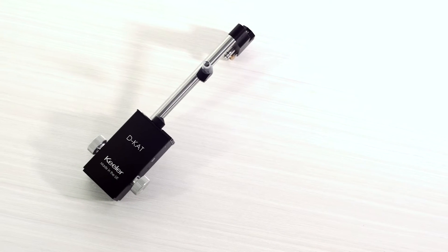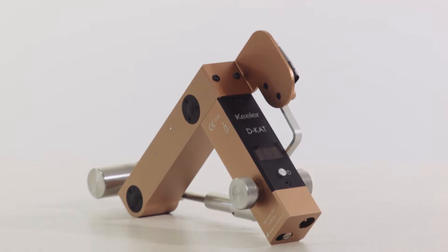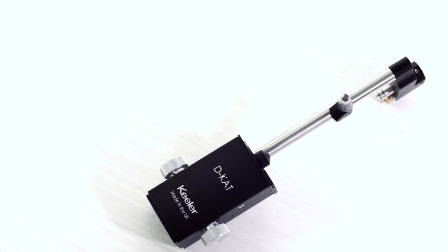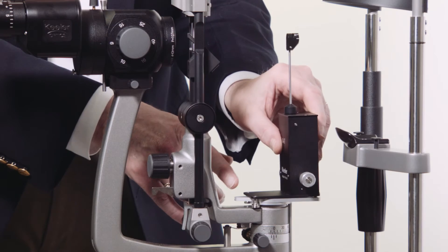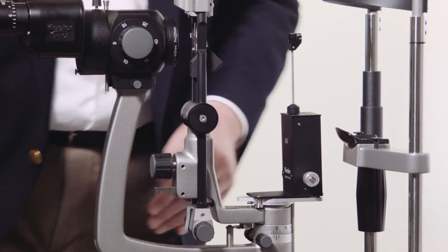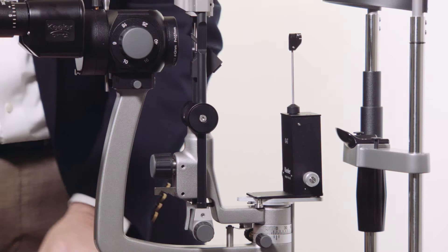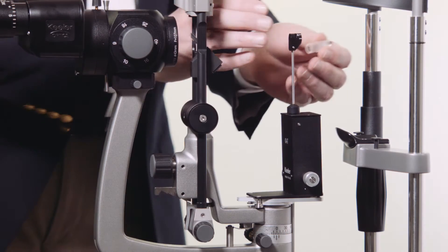The Keeler Applanation Tonometer Series uses the widely acclaimed Goldmann Applanation Principle to directly assess intraocular pressure by measuring the force required to flatten a constant area of the cornea. The advantage of using a Goldmann-type tonometer is that IOP can be measured during routine examination with a slit lamp. There is no calibration necessary and standard deviation between measurements is low.